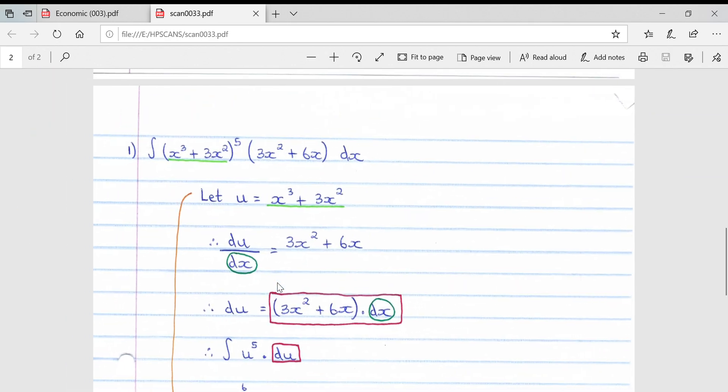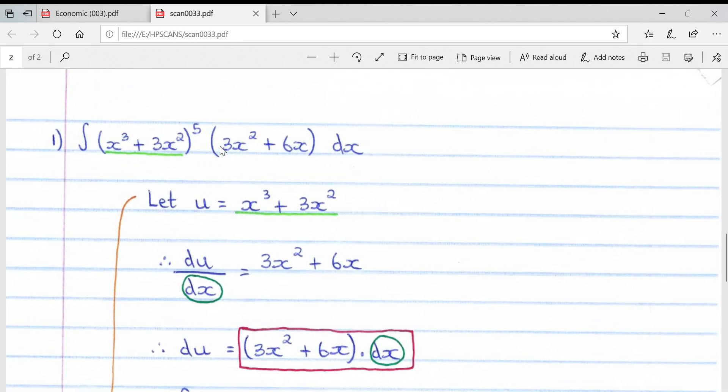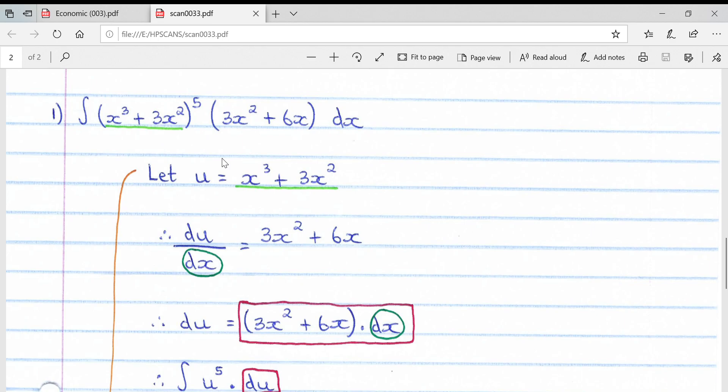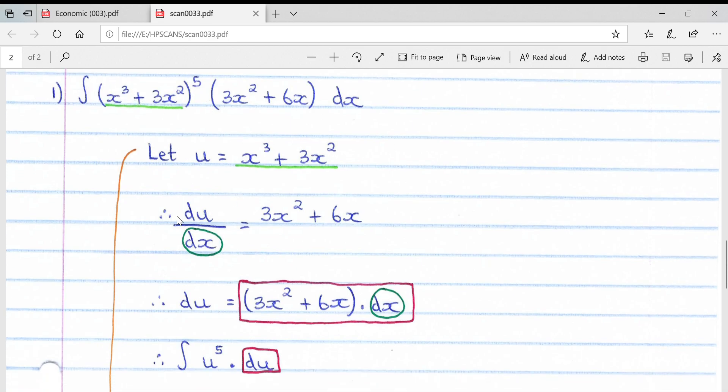The next example is the exact same as in question one, although using a different method. I personally do not like this method as it takes longer than the simple method I showed you, although I will show you in case they ask in the paper - and they sometimes do - to integrate strictly using u-substitution. Whatever bracket is to the power, we let the inside equal u. So u equals x cubed plus 3x squared. Then we differentiate this: du over dx equals 3x squared plus 6x.